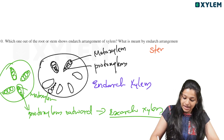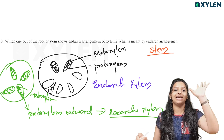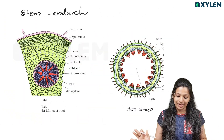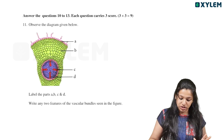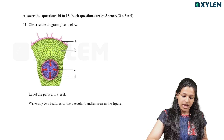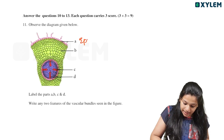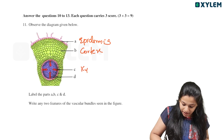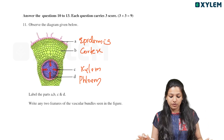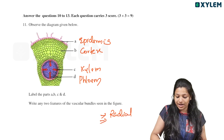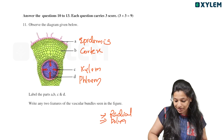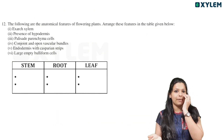In endarch xylem, the protoxylem is towards the center. Observe the diagram given below. We are looking at the ABCD labels in a dicot root. The labels identify the epidermis, cortex, xylem, and phloem. The vascular bundle shows radial arrangement, which is a feature of the dicot root.